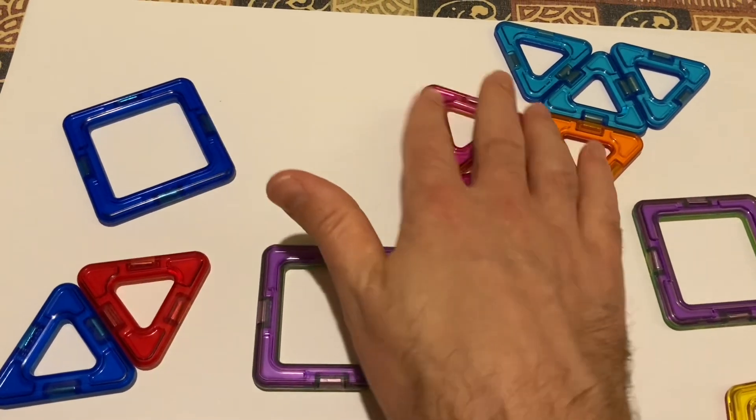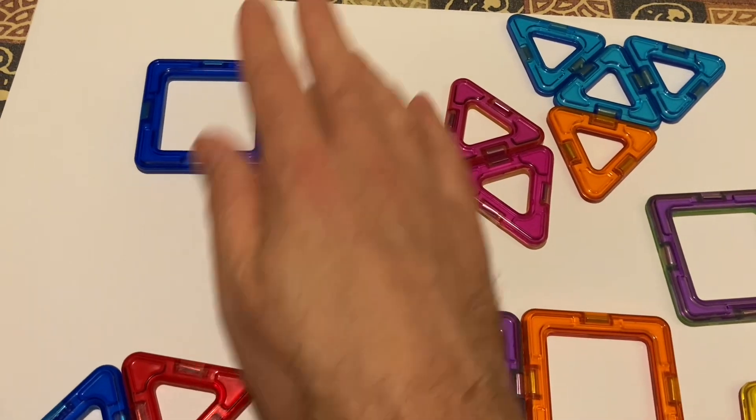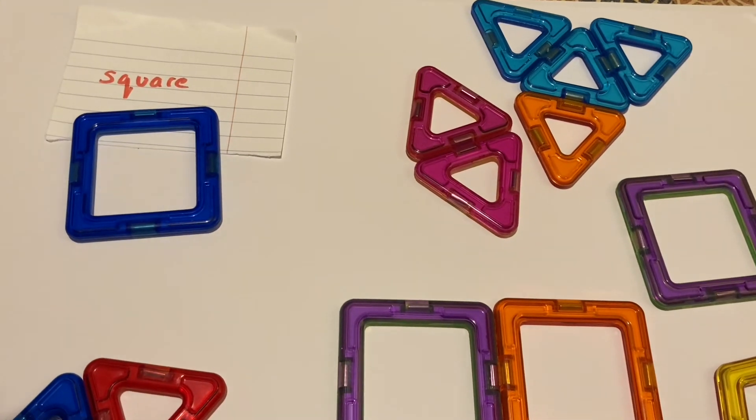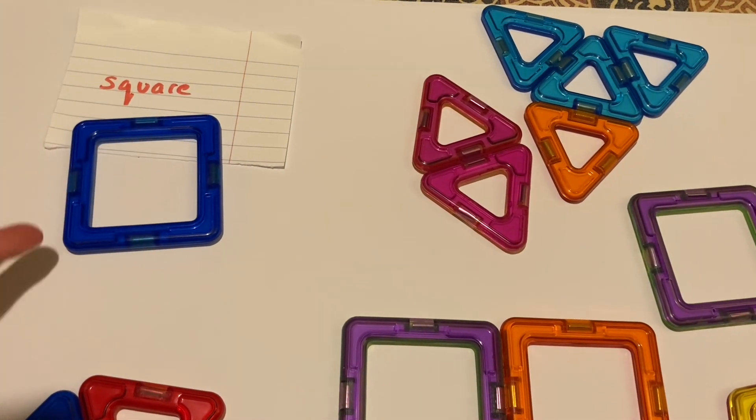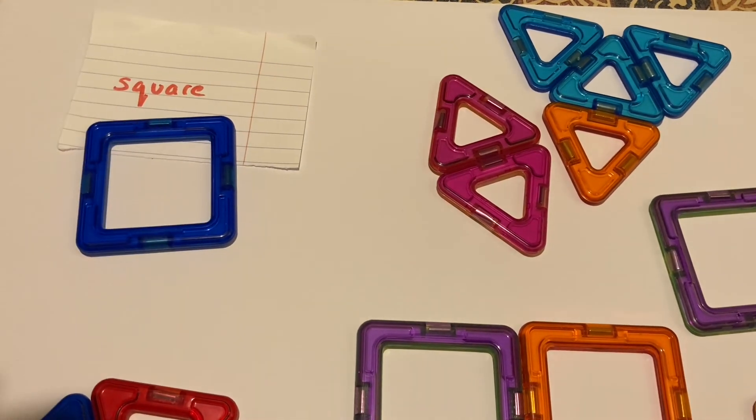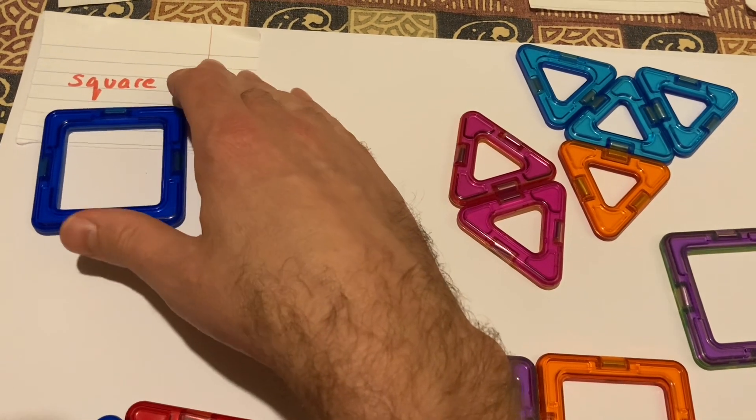What have we got here? A square. And what properties are there of a square? Well, there's four parallel sides and four right angles, and all four of those sides are equal.